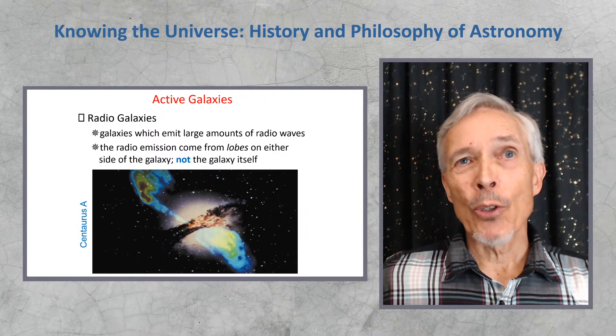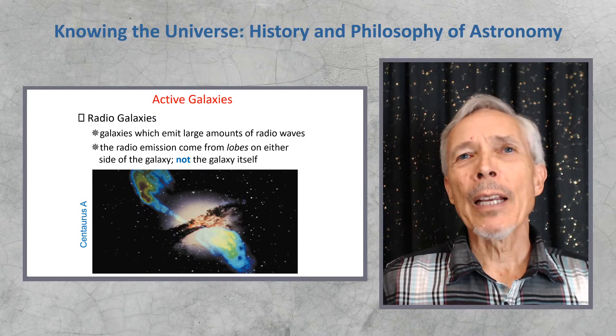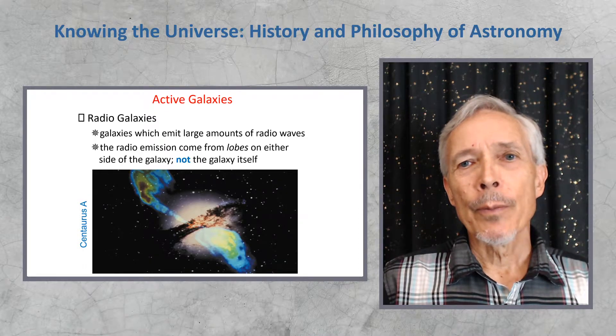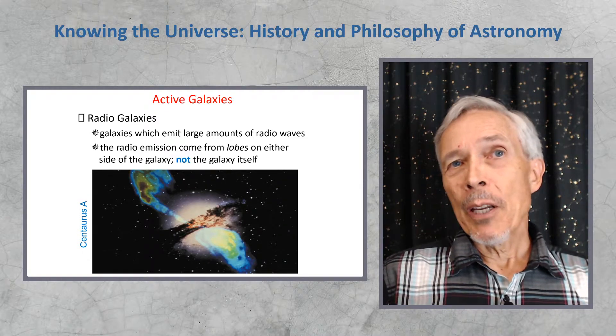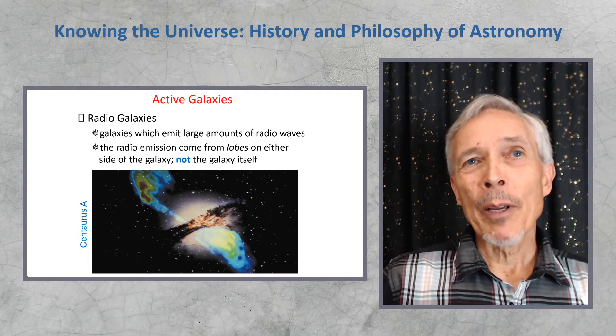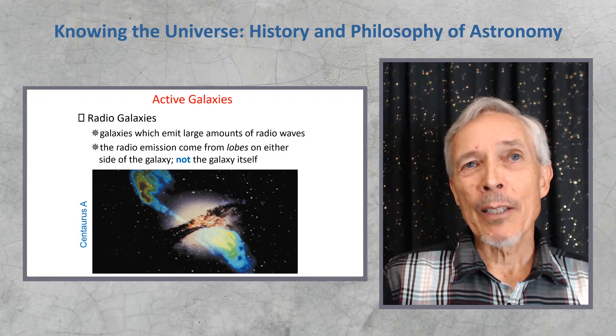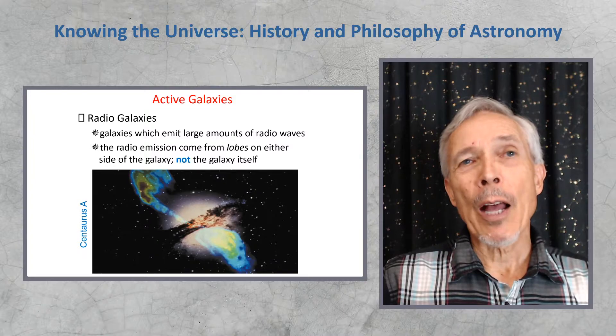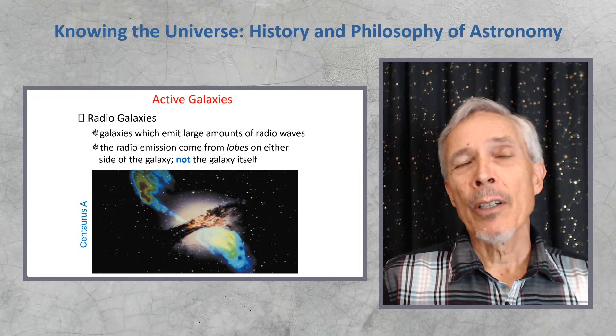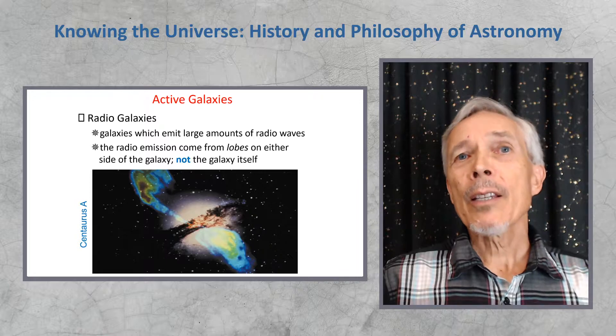Another set of objects were discovered in the 1940s and 50s, as radio astronomy matured. And these were galaxies emitting large amounts of radio waves. Why is that surprising? Because normal stars simply don't emit radio waves. The Sun emits a very feeble amount of radio waves. So if galaxies were only made of a lot of stars, their radio emission should be very weak.